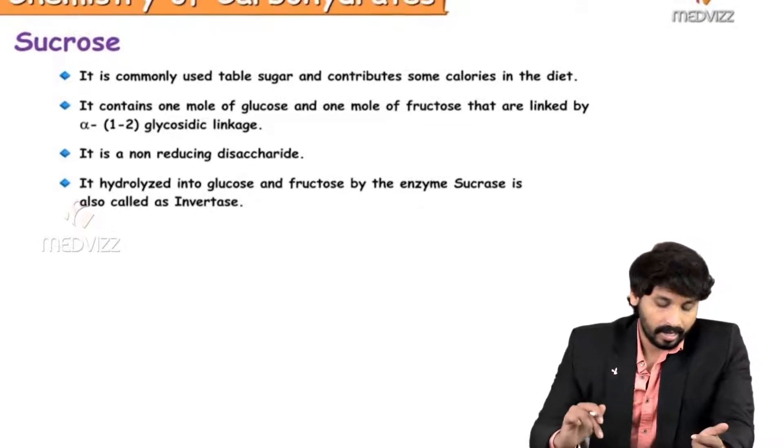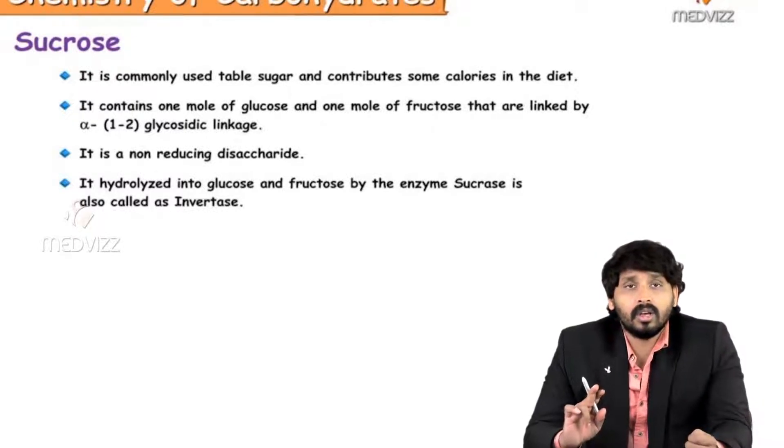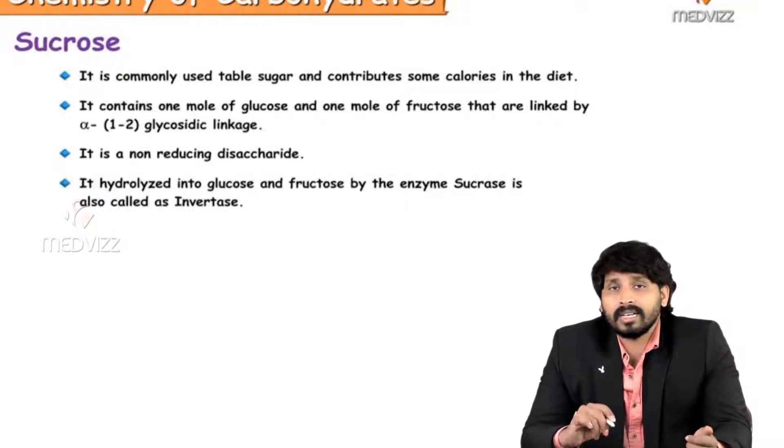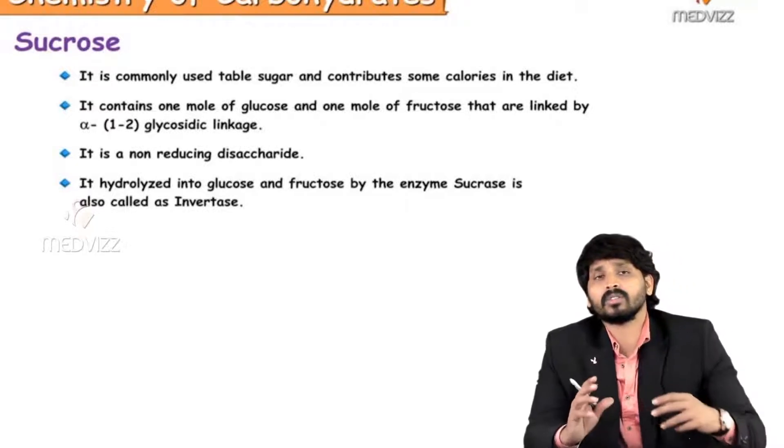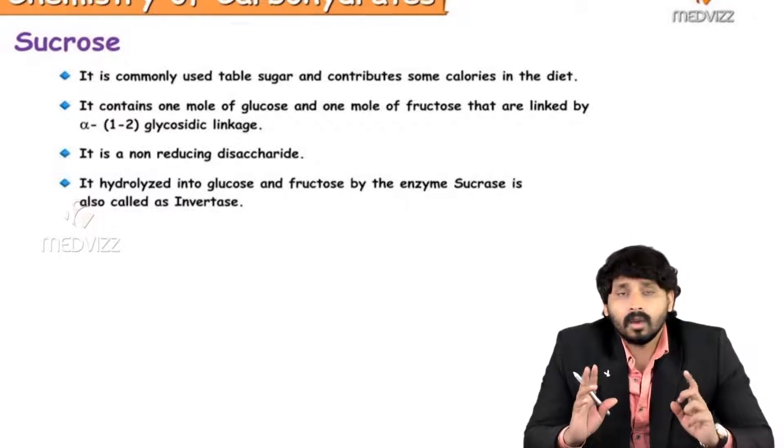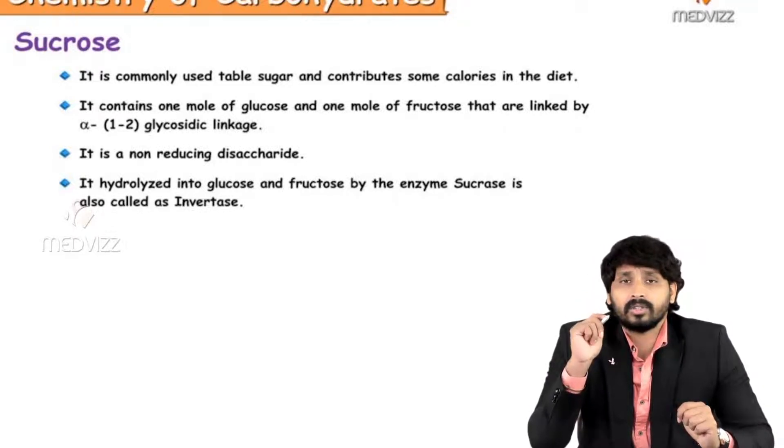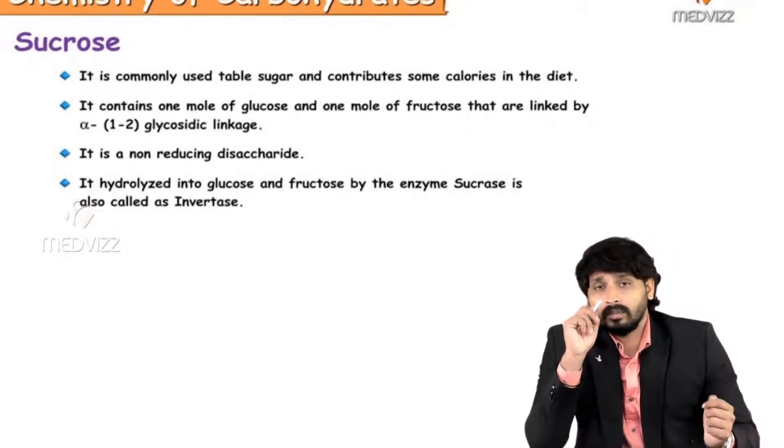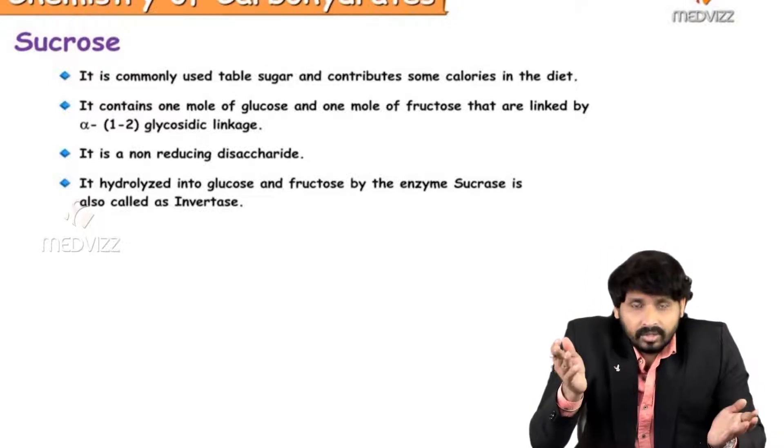Next coming to the final disaccharide that is left with non-reducing disaccharide that is sucrose. It is commonly used as a table sugar and contributes some calories in the diet. That means the rich source of sucrose is sugarcane. And it contains one mole of glucose and one mole of fructose which are linked by alpha 1,2 glycosidic linkage. Here the orientation of glucose is alpha form and the orientation of fructose is beta form. Alpha 1, beta 2 glycosidic linkage. And it is non-reducing disaccharide.